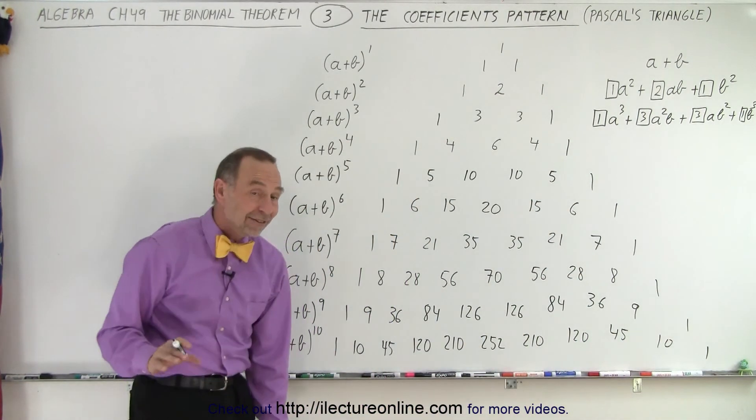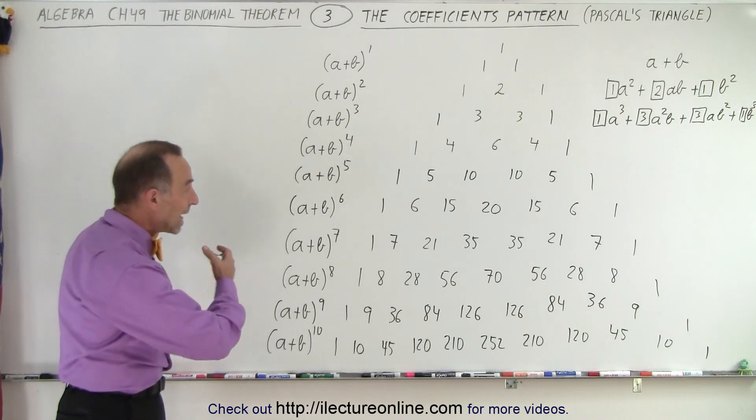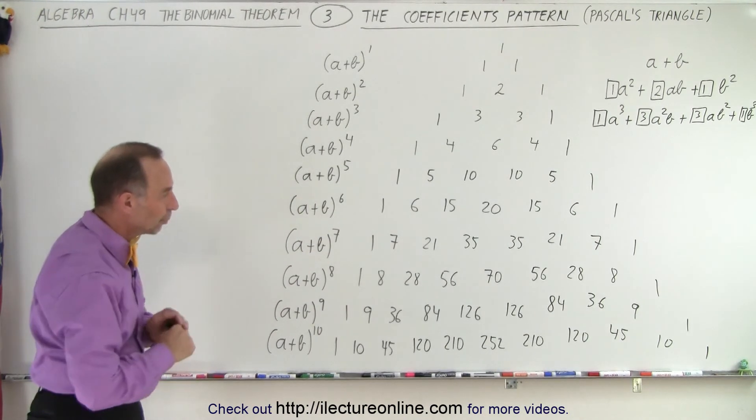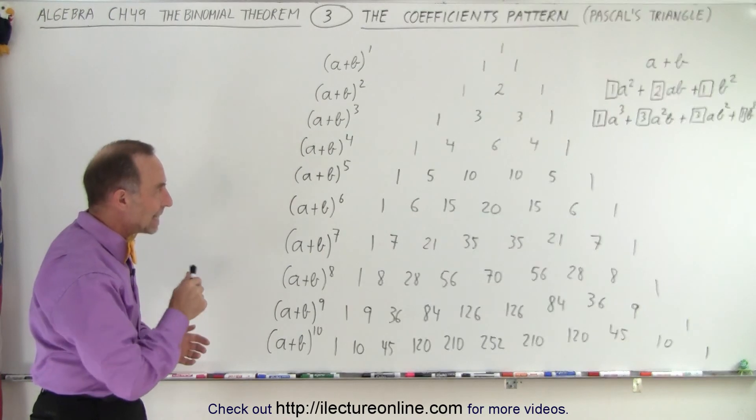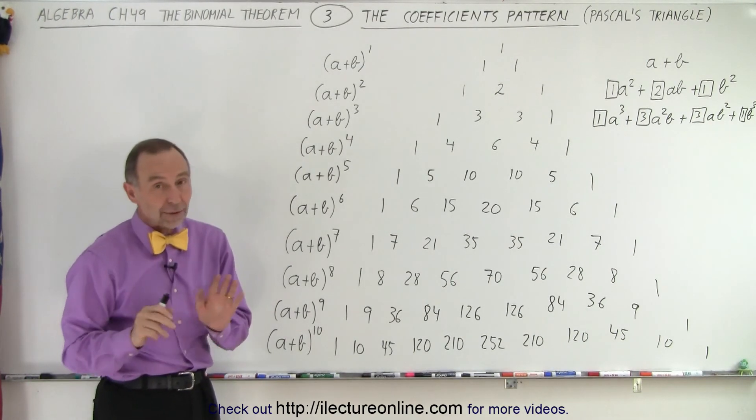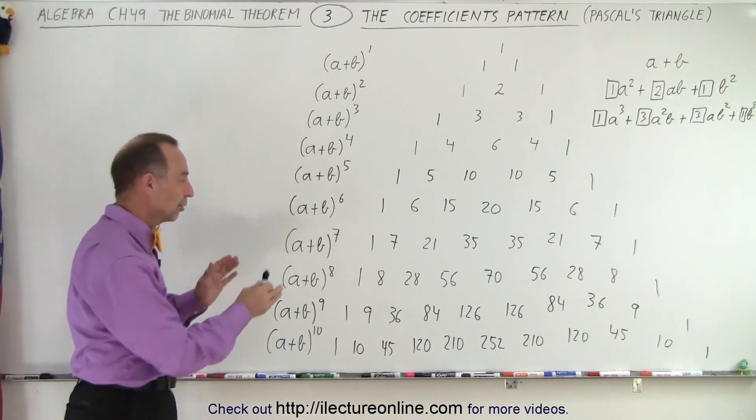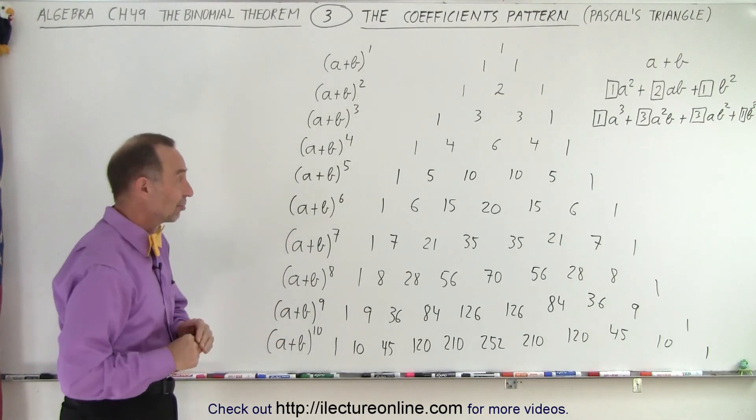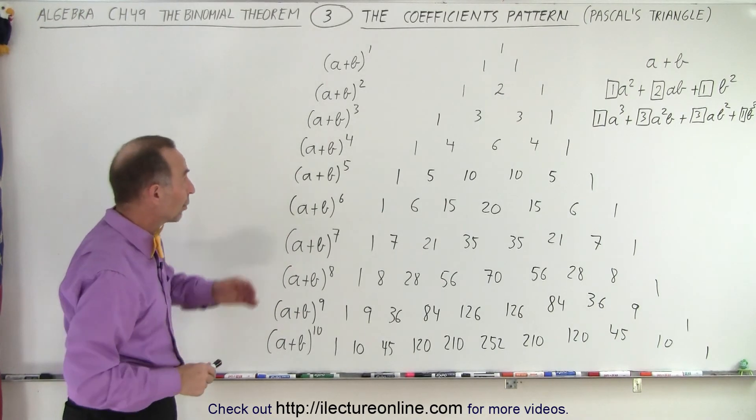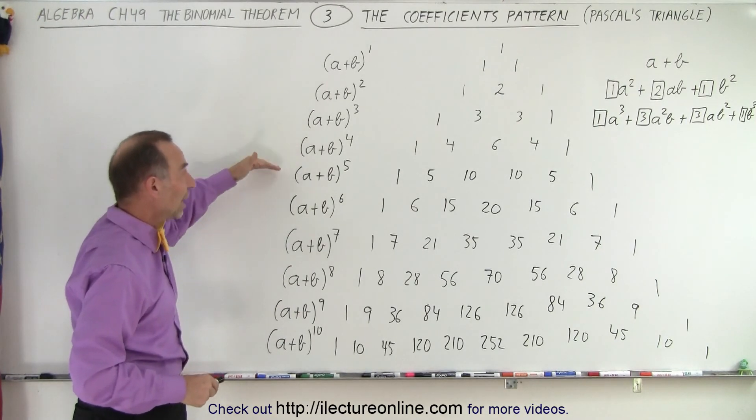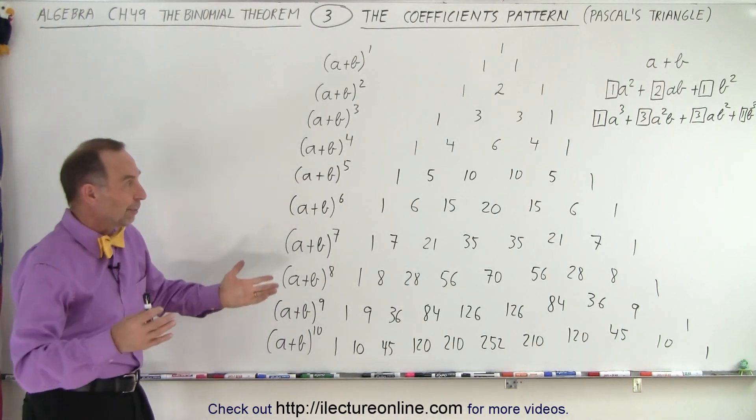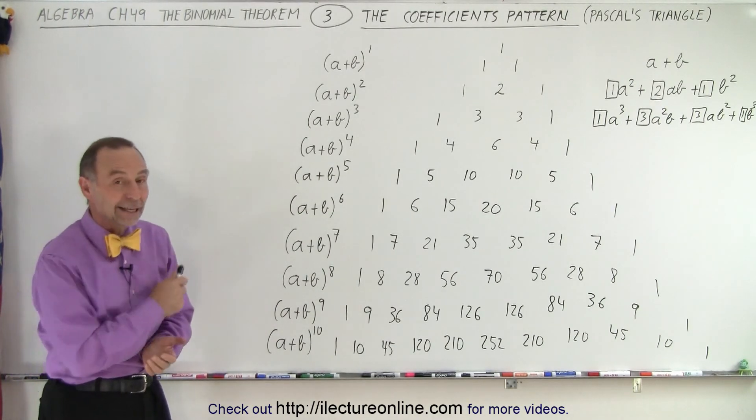And notice, it really isn't that hard to come up with any of the coefficients just by working through the triangle called Pascal's triangle. And that is how we find the numerical coefficients. Now, there are other methods in order to get these numerical coefficients, and we'll learn how to do that, but definitely Pascal's triangle. You can crank one out real quick, especially when it's one of these types. You can very quickly come up with the numerical coefficients of our binomial expansion, and that is how it's done.